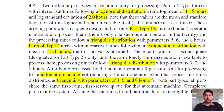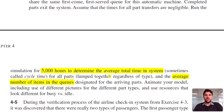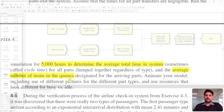After being processed by the human operator, all parts are sent to an automatic machine that does not require any human operator. The processing time of this automatic machine follows the triangular distribution with parameters 4, 6, and 8 hours. We simulate this system for 5000 hours to determine the total time in system and the average number of items in the queue.